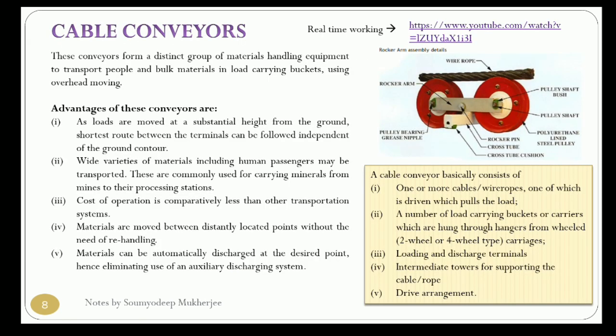The cable conveyor forms a distinct group of material handling equipment to transport people and bulk material in load-carrying buckets using overhead moving cables or wire ropes. They are composed of one or more spans from the loading point to the discharge point, covering long distances up to several kilometers. This conveyor is also commonly known as ropeways or aerial tramways.